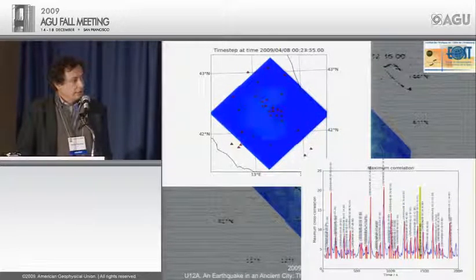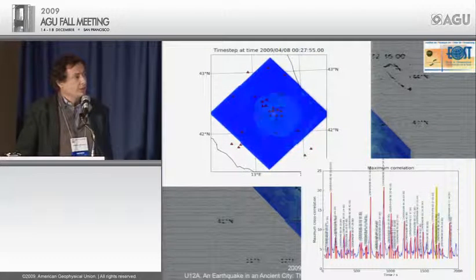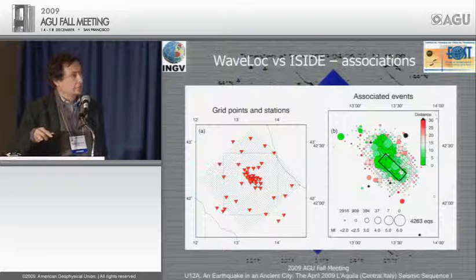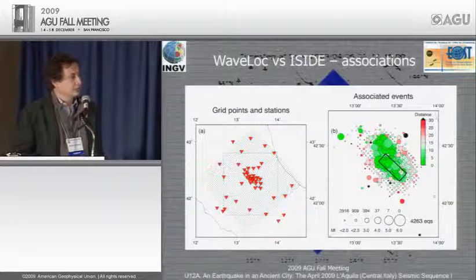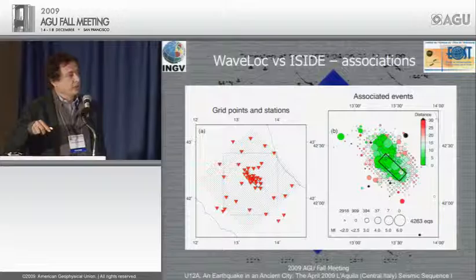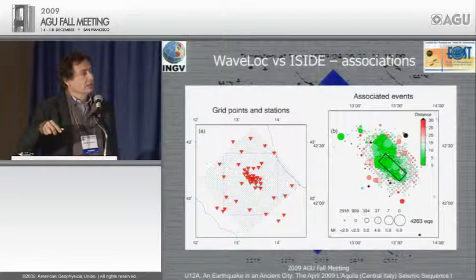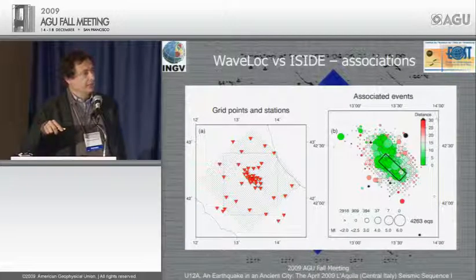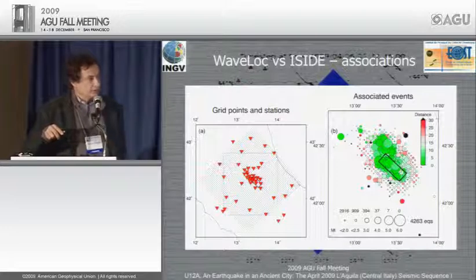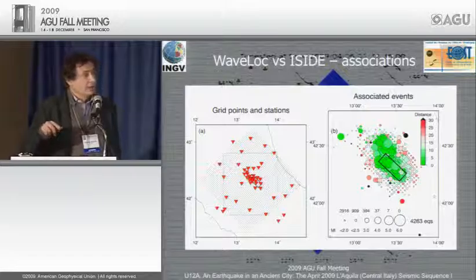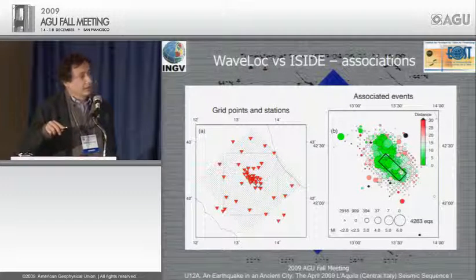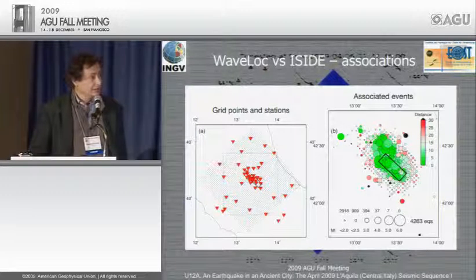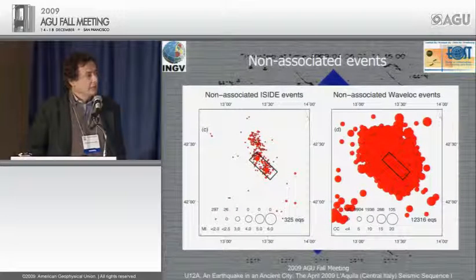In the next few slides I show statistics comparing our results with the ISIDE catalog — the earthquake list from the INGV seismic center. We plotted our associated events with circle size proportional to magnitude, and color scale indicating how different our location is from the ISIDE catalog. We analyzed the whole sequence except the first half hour, which needed different parameter settings. We also easily located the main shock.